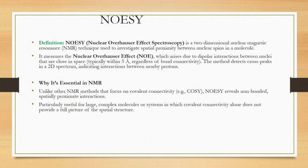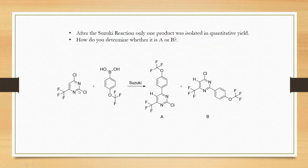This is an example of a Suzuki reaction. You can see that it can take place at this chloro or this chloro also. After the Suzuki reaction, only one product was isolated in quantitative yield. Theoretically we can say that this is the major product and this is the minor or negligible, but still we have to confirm whether the isolated product is A or B.